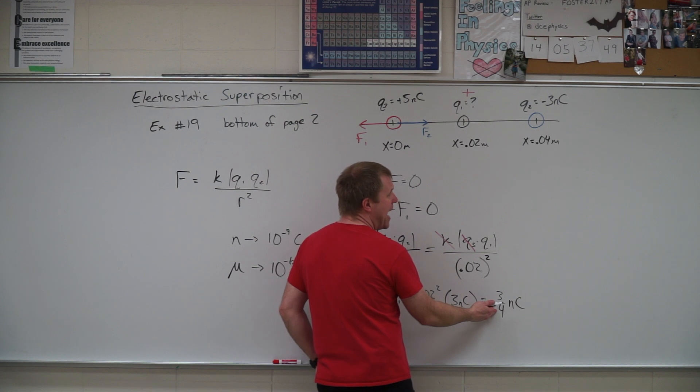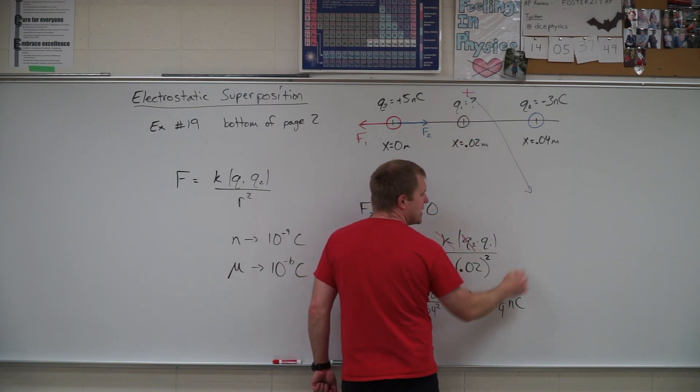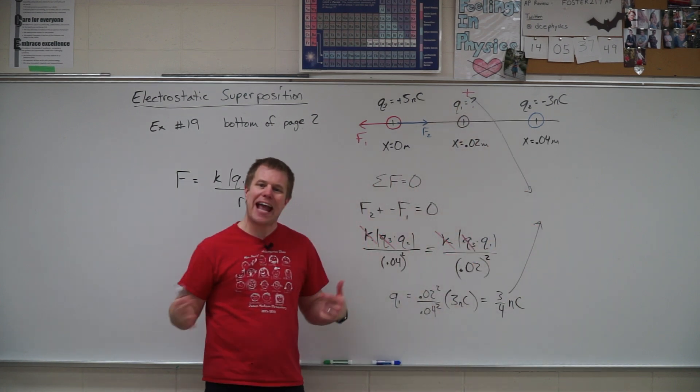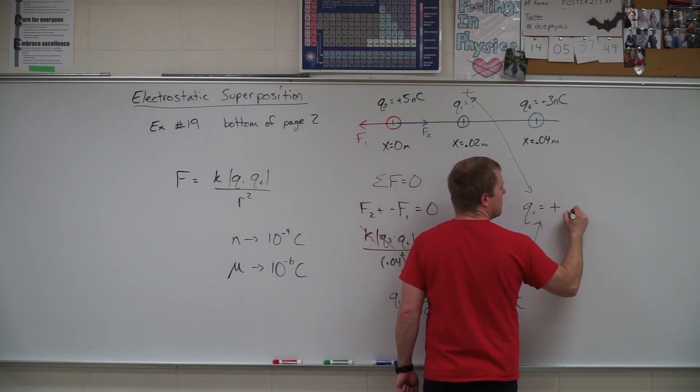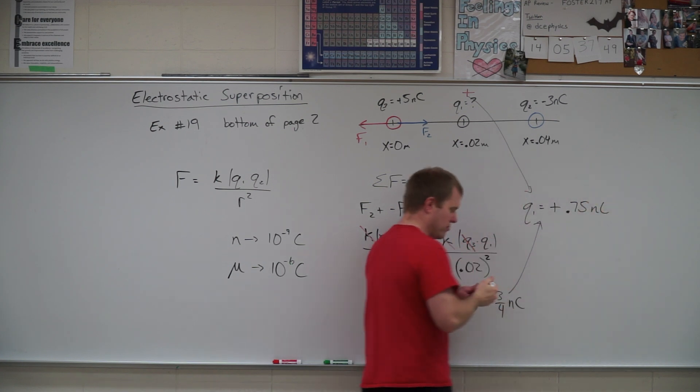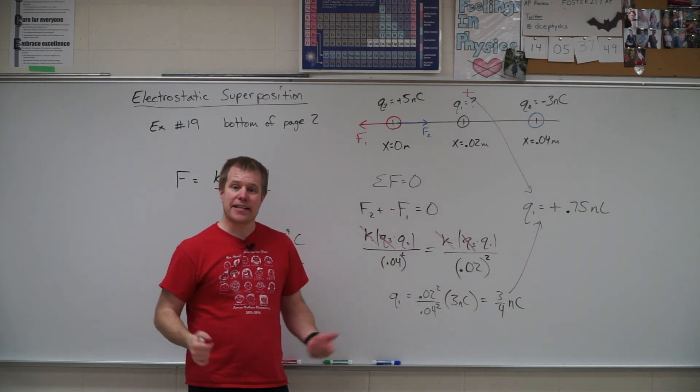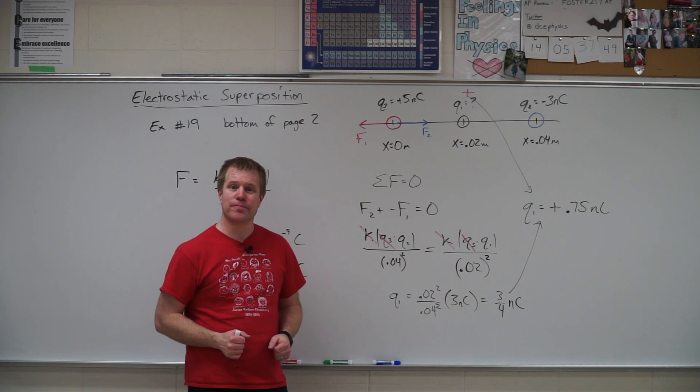So this is the magnitude, and so I need to put these two parts together, the magnitude and the sign, to find out that q1 is going to be a positive 0.75 nanocoulombs. So there's that example. Try some on your own from the homework.